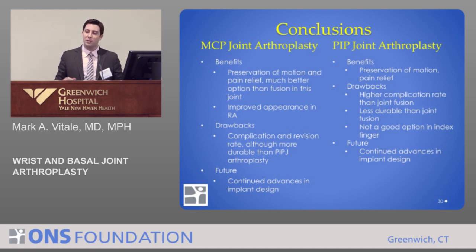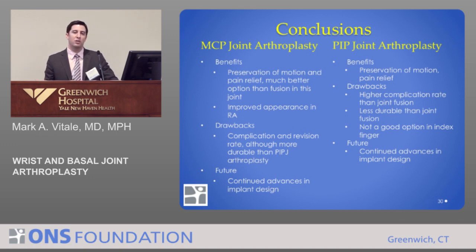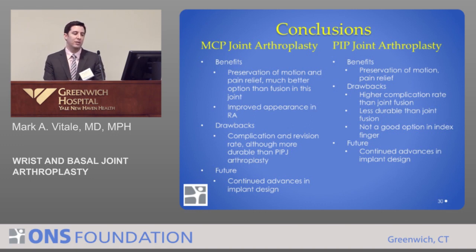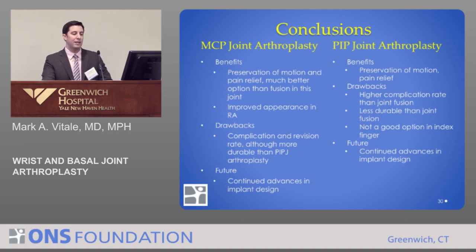In summary: MCP joint replacement preserves motion, is a much better option than joint fusion, and is a good option in this joint. It also improves deformity in patients with rheumatoid disease, though complications and revisions do occur — much less so than with PIP joint arthroplasty. For PIP joint arthroplasty, the benefit is for patients who really want to preserve range of motion — it will reduce pain — but complication rates have been extremely high, and joint fusion is probably a better option in most PIP joints. Joint replacement is not a good option in the index finger. In the future, we may see continued advances in implant design, but we have a ways to go in the small joints of the hand compared to other joint replacements.